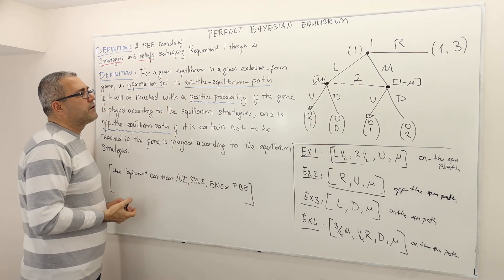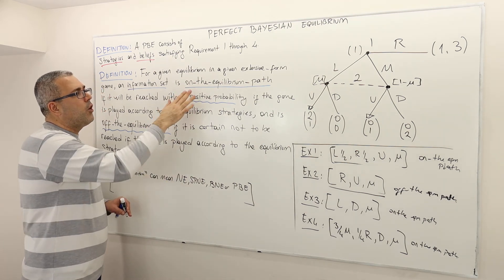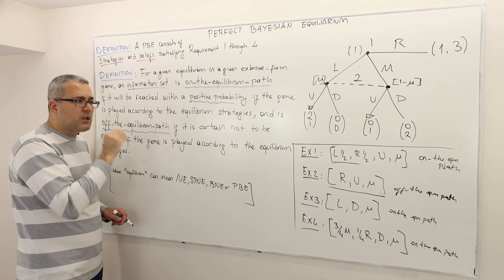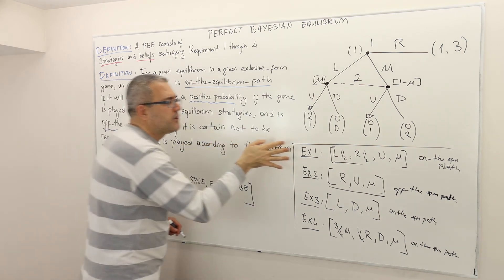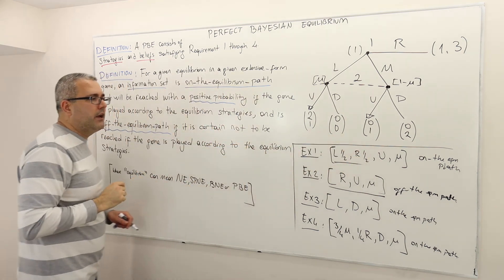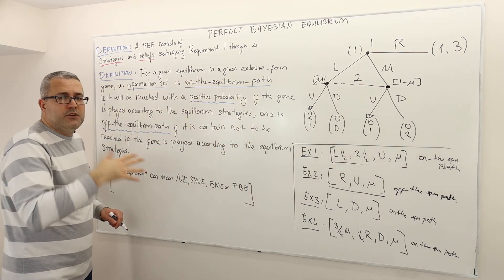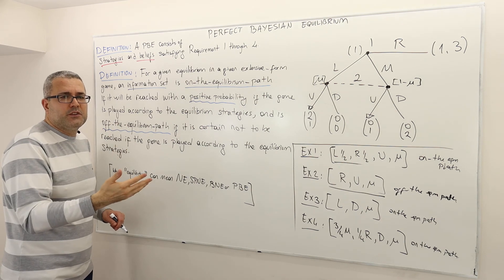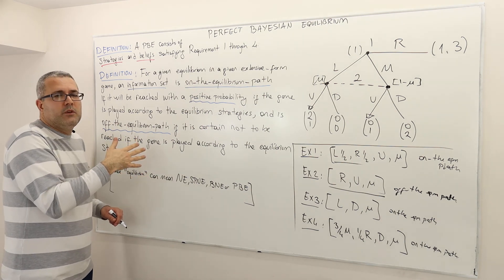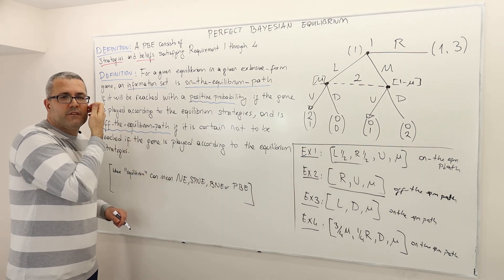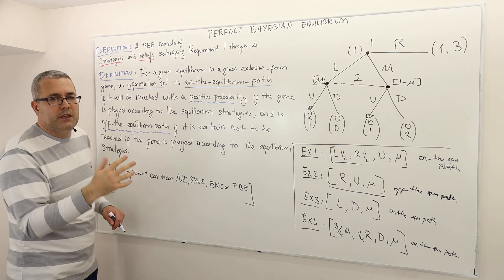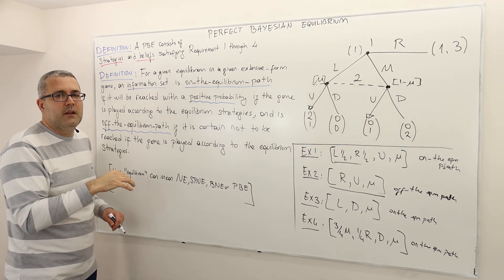Whether an information set is on or off the equilibrium path depends on the strategy profile. If you change the strategy profile, you change whether the information set is on or off the equilibrium path.